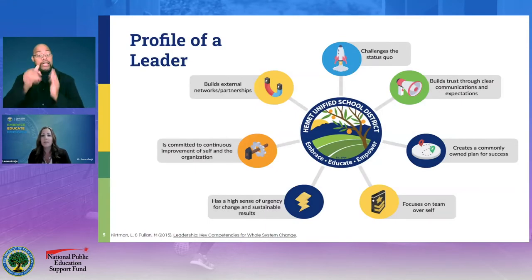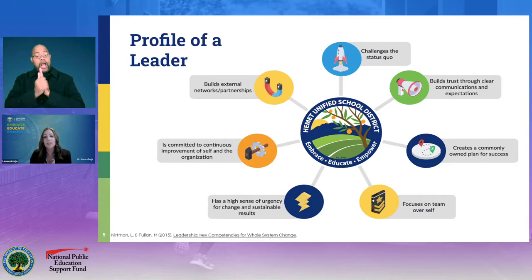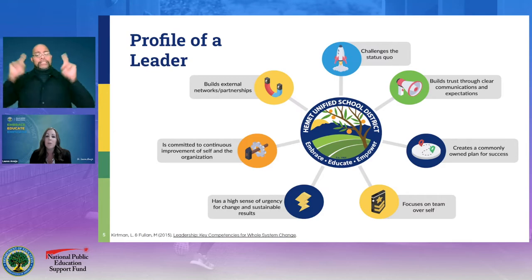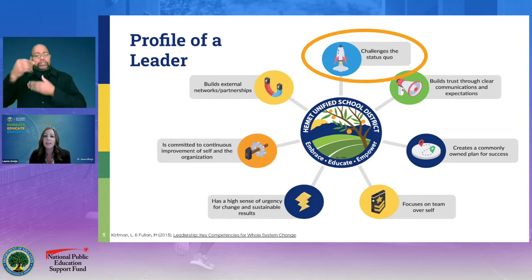Hemet Unified has developed the profile of a leader, inclusive of seven competencies that come from the work of Kirtman and Follin. Although all seven competencies are extremely important for any leader to be successful, one of the competencies we have been most centrally focused on is challenging the status quo. Our district has many needs, and our leaders and employees need to be ones who are going to be thinking outside of the box, be willing to take risks, and do the work differently.